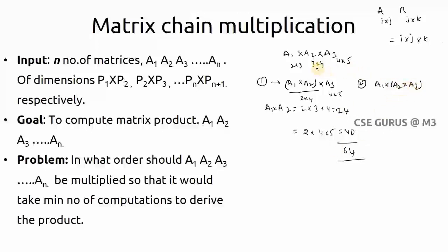If we go with A2 and A3 first: A2 is 3 by 4, A3 is 4 by 5, so the computations are 3 × 4 × 5 = 60. The resultant is 3 by 5. Then A1 (2 by 3) multiplied with the resultant (3 by 5) gives 2 × 3 × 5 = 30. Total computations: 60 + 30 = 90.